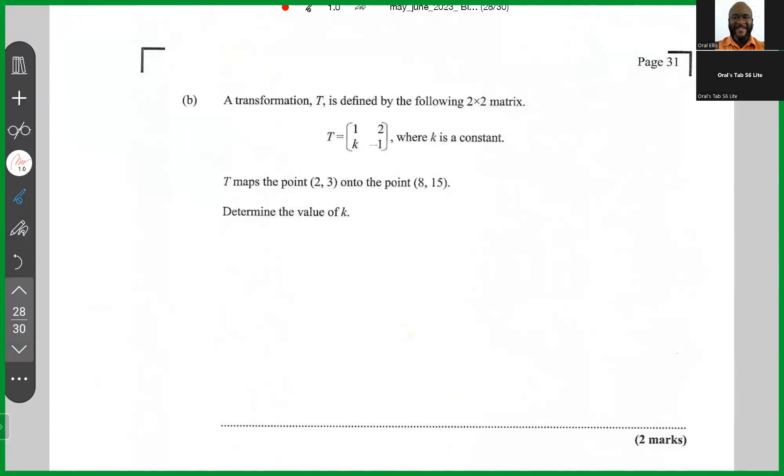We're told that a transformation T is defined by the following 2 by 2 matrix, where k is a constant. And we are told that T maps 2, 3 onto 8, 15. Determine the value of k.